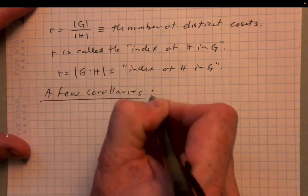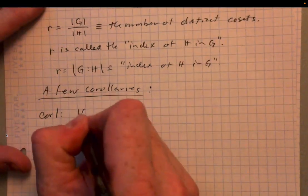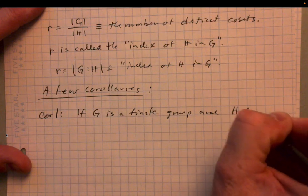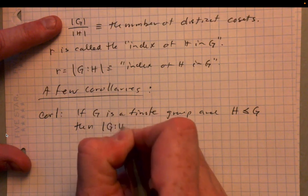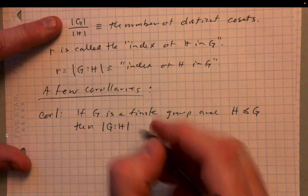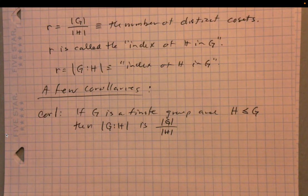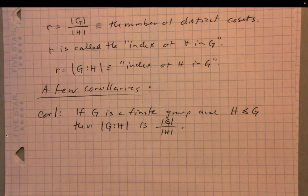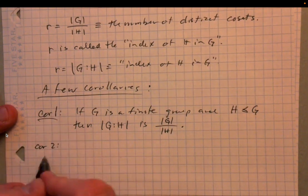Lagrange's theorem spins off a whole bunch of corollaries. Corollary 1: if G is a finite group and H is a subgroup, then the index of H in G, denoted [G : H], equals |G| / |H|. This is a direct consequence of the previous proof.